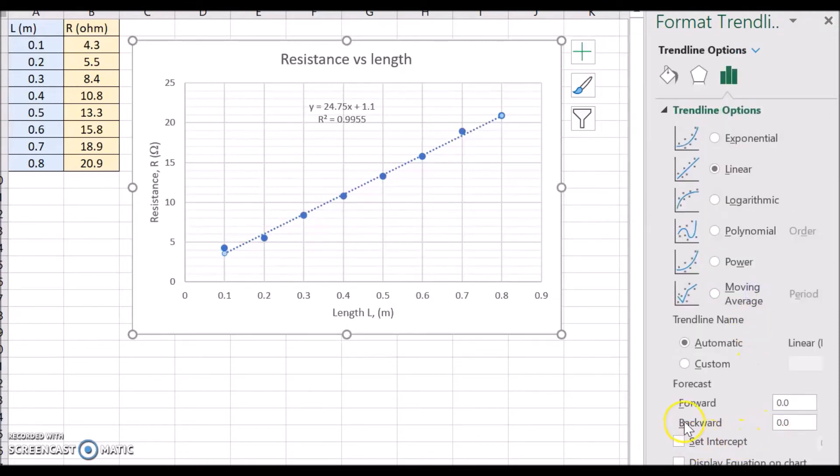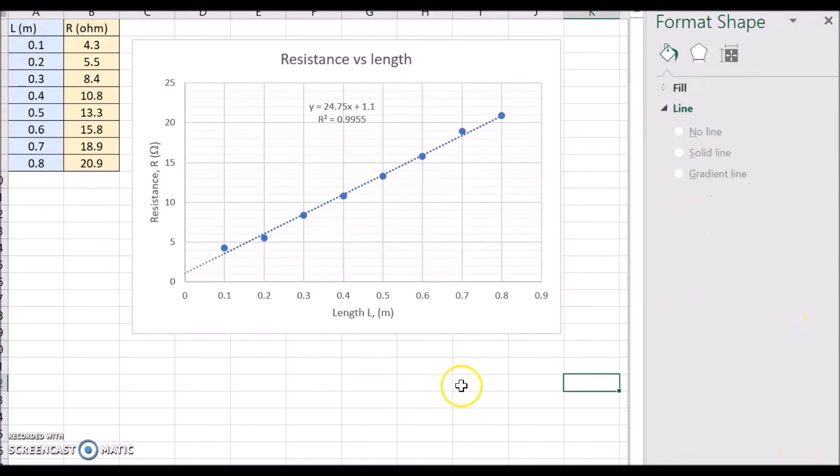This time I'll go backwards 0.1 and we'll see what we get. Okay, now you can see it's 1.1 as the equation suggests. So there's the intercept on the y-axis which is the resistance, 1.1. Now like I said that's systematic error.